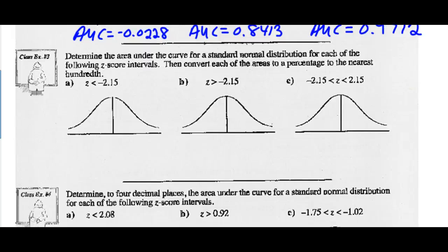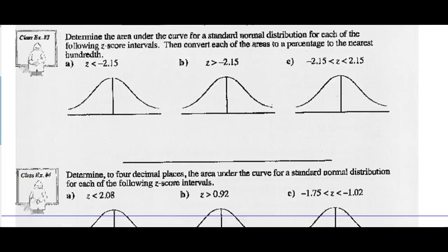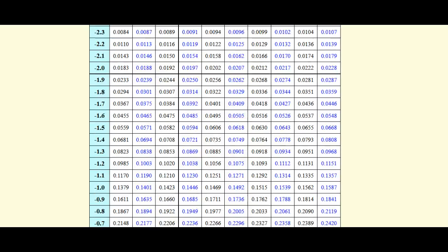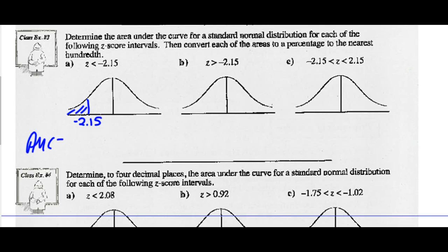Example 3: determine the area under the curve for a standard normal distribution for each of the following Z-score intervals, then convert the areas to a percentage to the nearest hundredth. For a Z-score of negative 2.15, looking that up on our negative Z-score table, negative 2.15 gives an area of 0.0158. As a percentage, that's 1.58%.